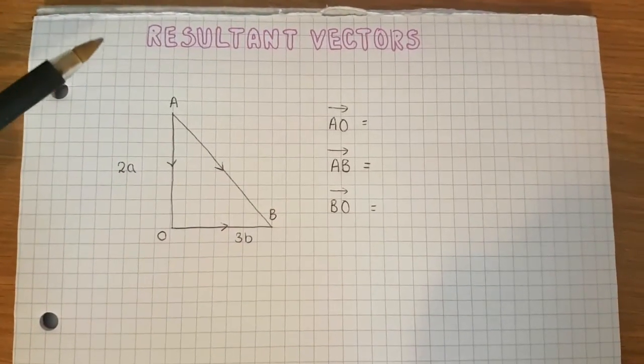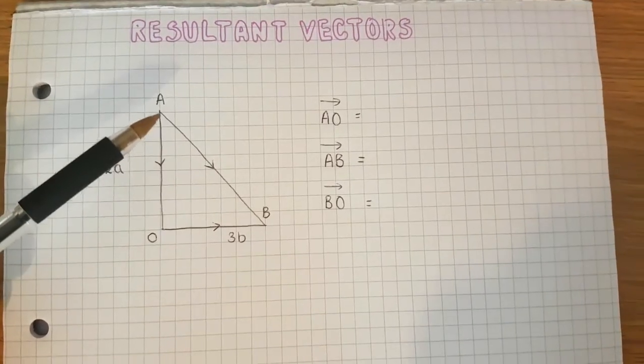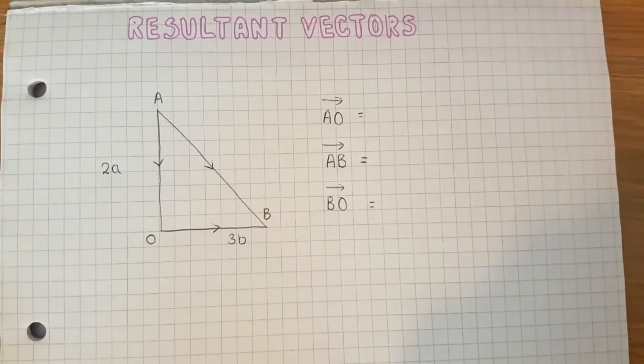Hi U9, today we're going to look at resultant vectors. A resultant vector is a vector that's produced when we put together two or more vectors.